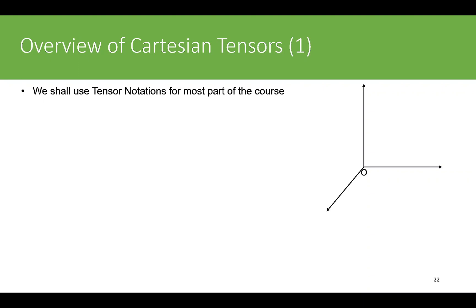In this course, we shall use tensor notations for most part of the course. Consider a rectangular Cartesian coordinate system. The axes are denoted by OX_i where i varies from 1, 2, and 3, so we have coordinate axes as X1, X2, and X3.